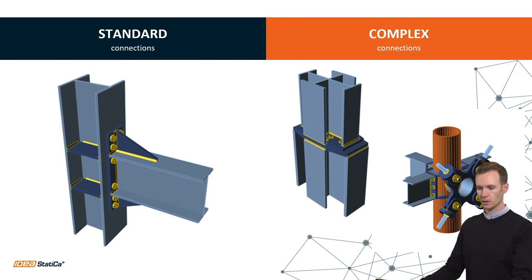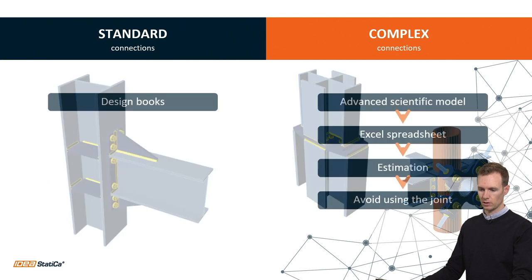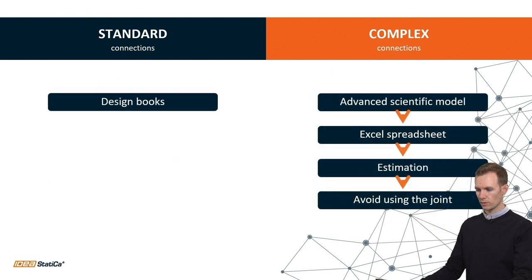The Connection module can easily handle standard connections, with design guides and predefined examples. For non-standard ones, engineers previously had to build advanced scientific models in programs like ANSYS or Nastran, then use Excel spreadsheets to code check according to Eurocode, estimating many variables along the way. Sometimes it was just easier to avoid such a joint entirely.